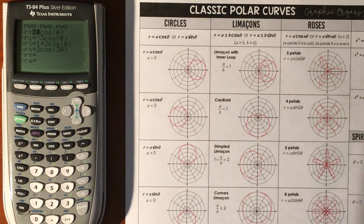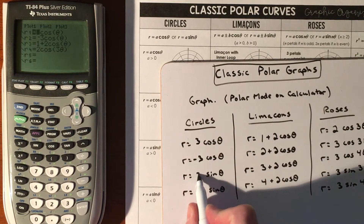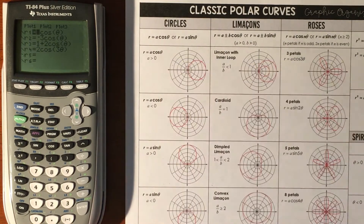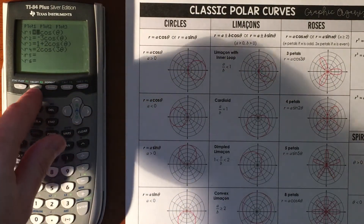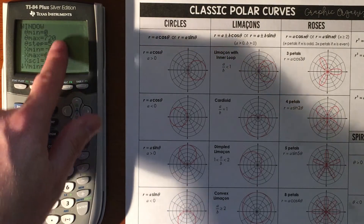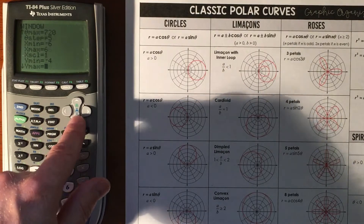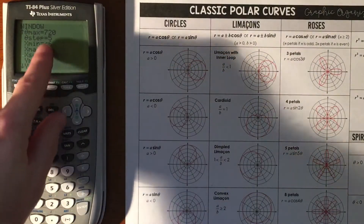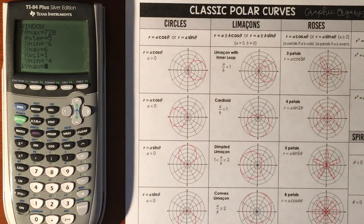My first equation is going to be three cosine theta. I adjusted my window - going from zero to 720 degrees for the angle, with increments of five degrees. My X's went from negative six to positive six with a scale of one, and my Y's went negative four to positive four, because this graph is wider than it is tall. If you make them the same, your circles are not going to look like circles - they'll look like ovals. So it's a two-to-three ratio on your window. I graphed three cosine theta and it has a circle look to it, and the three is the distance out.